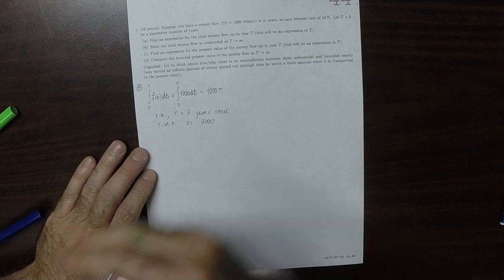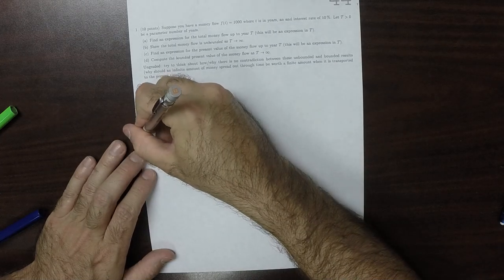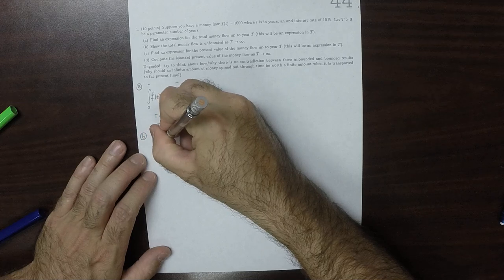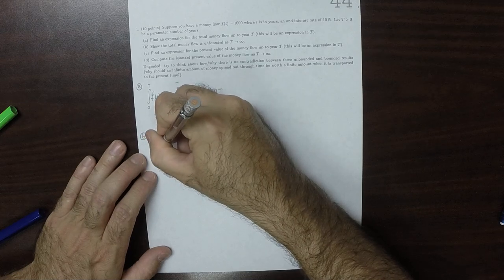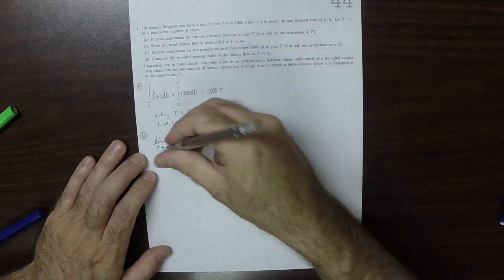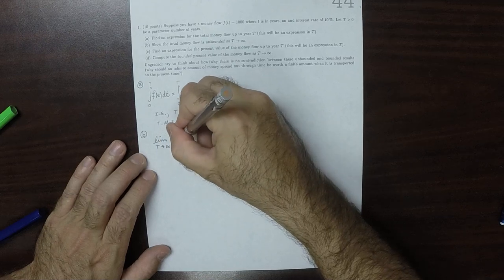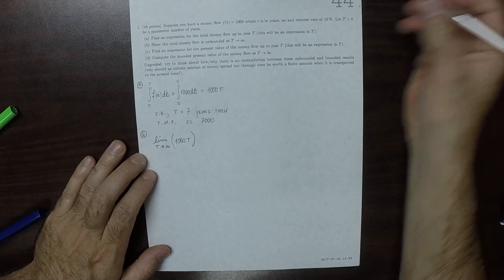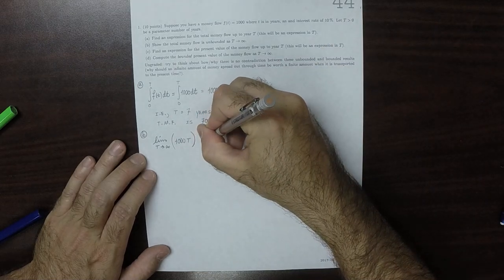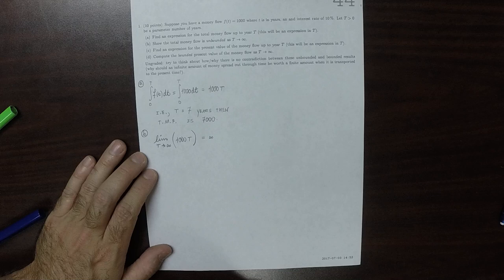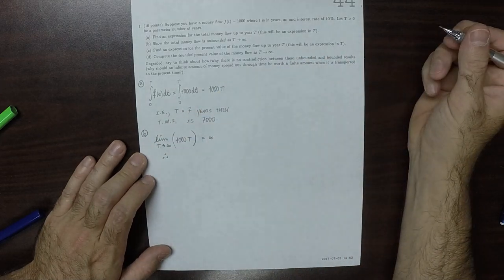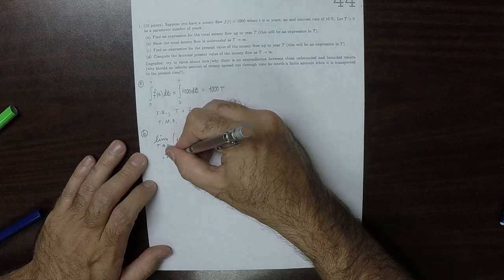Okay, part b is saying that, well, let's compute the limit as big T goes to infinity of that expression, 1,000 t. Well, that's obviously infinite. So, therefore, the total money flow is unbounded.